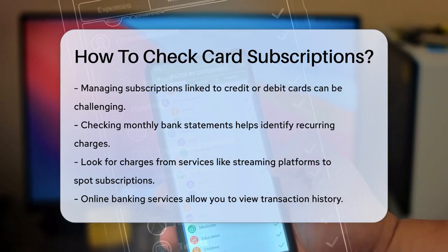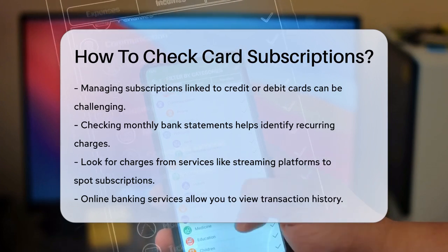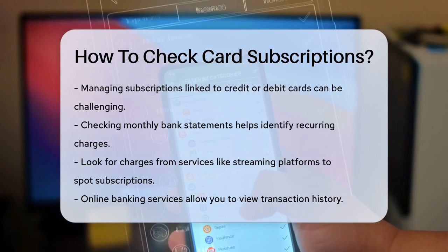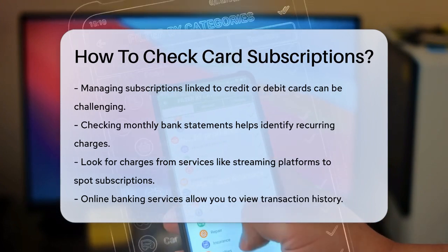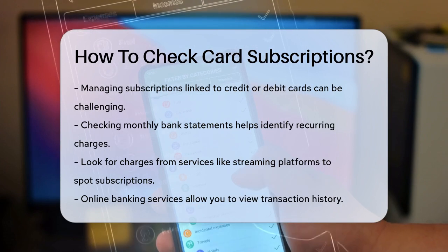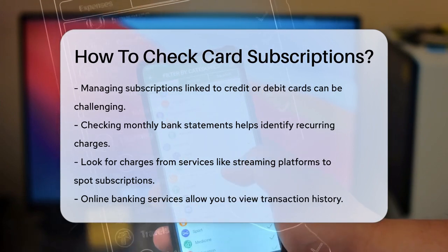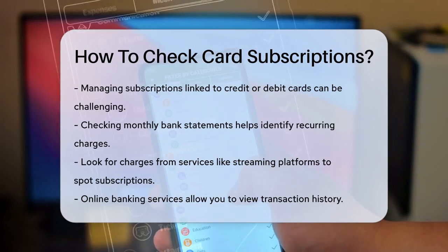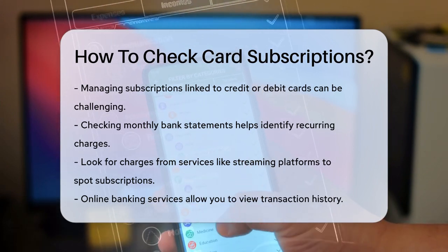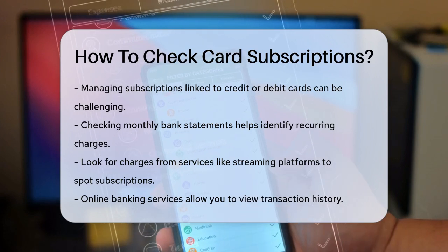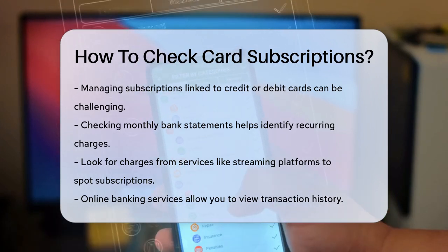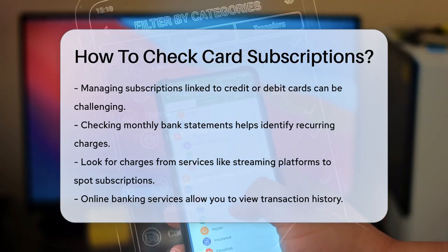First, let's start with your bank statements. Checking your monthly bank statements is one of the simplest methods. Look for recurring charges, as these will typically indicate subscription services. You can do this either online or by reviewing physical statements if you prefer a tangible record.